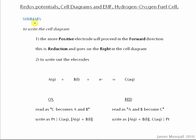Okay, so to summarize here, to write the cell diagram, the more positive electrode will proceed in the forward direction. That is reduction, gain of electrons. And it goes right on the right-hand side in the cell diagram. That's a convention.